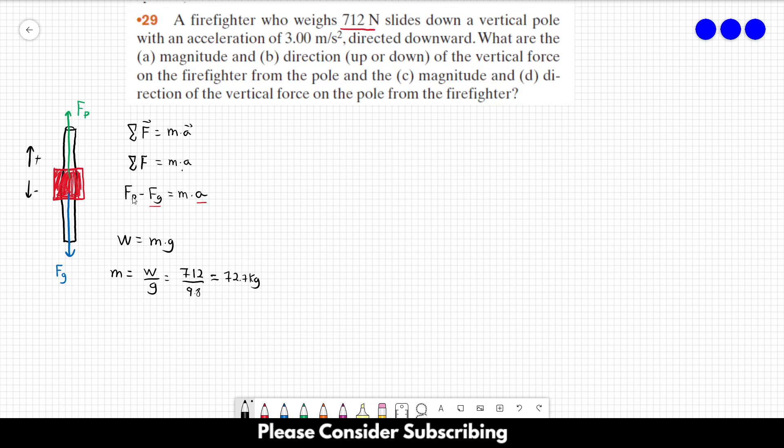So now we know the mass, we can isolate Fp, and that's what we want. OK, so Fp is equal to mass times acceleration plus Fg. So the mass is equal to 72.7. The acceleration is minus 3 because it points downwards, and downwards is negative. So this is minus 3.